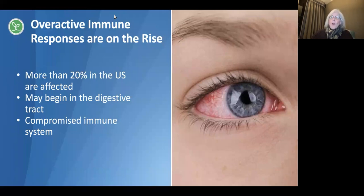The leukotrienes cause a production of excess mucus and fluid so that the body can either cough or sneeze out the offensive substance if need be. Overactive immune responses are truly on the rise. The National Health and Nutrition Examination Survey found that more than 20% of the population in the U.S. is now affected. That's one out of every five people.